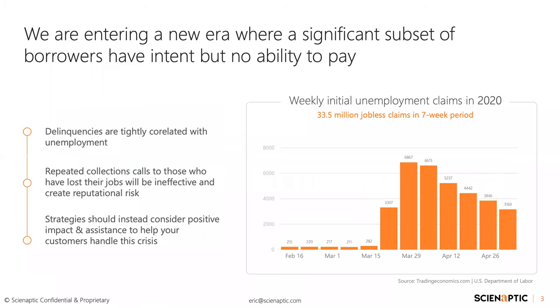We are entering a new era where a significant subset of borrowers have intent but no ability to pay. We all know that delinquencies are tightly correlated with unemployment rates. Repeated collections calls in this environment to people who may have lost their jobs will be ineffective, and can in fact have a negative impact both reputationally and in creating that relationship with your customers. Our recommendation is that strategies should instead consider positive impact and assistance to your customers to help them handle this crisis.